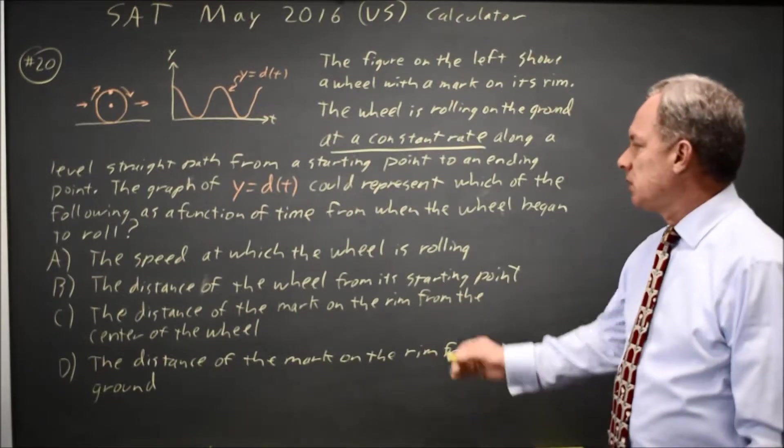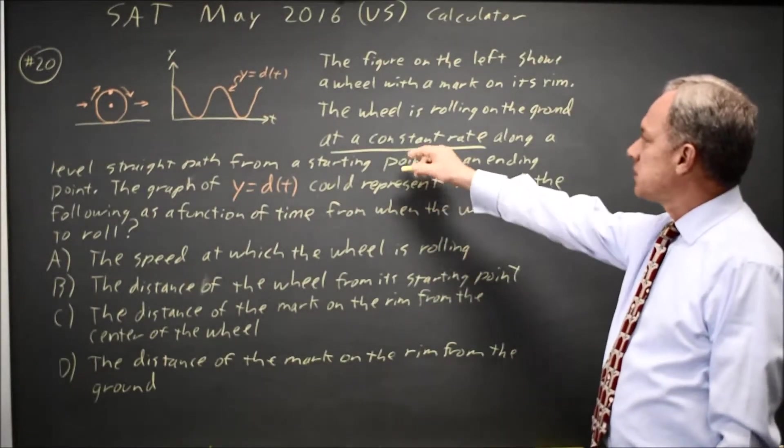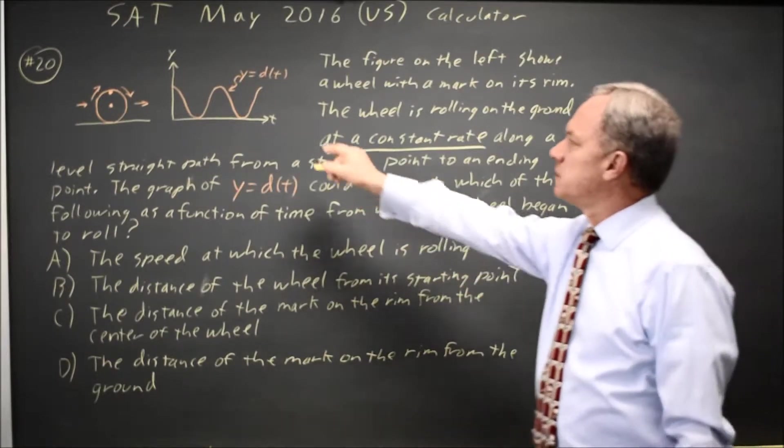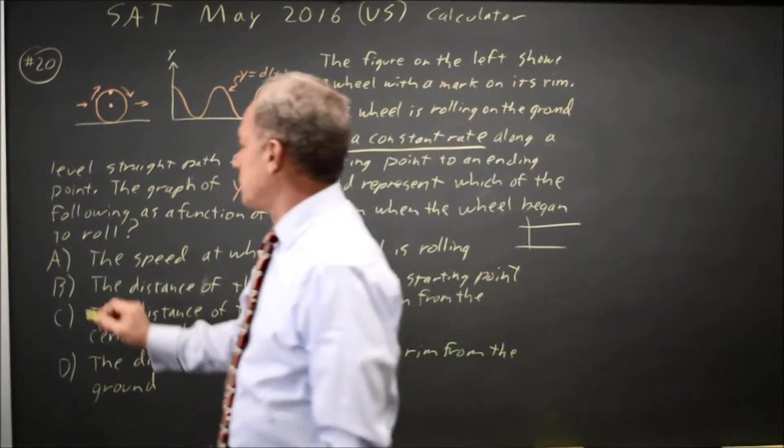Choice A is the speed at which the wheel is rolling. But they say constant rate, so the graph of constant rate should be horizontal and d of t is not horizontal. Choice A is wrong.